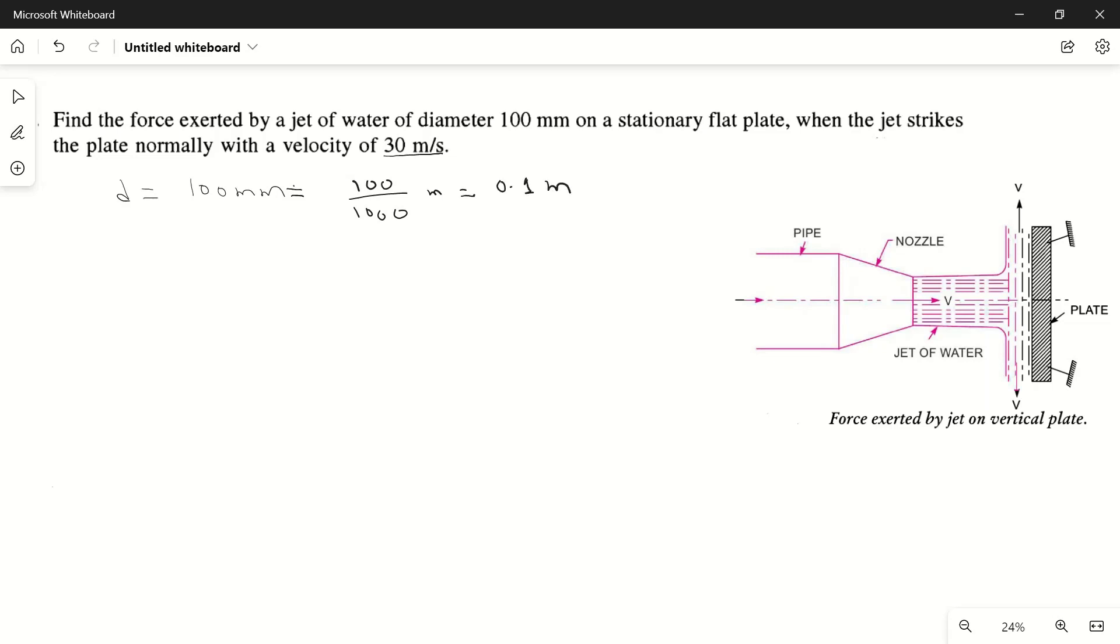Now velocity of the jet is also given, V is given as 30 meters per second. And another thing you see, the fluid is given as water, so the density of water rho is equal to 1000 kg per meter cube. This is the density of water which we are expected to remember.